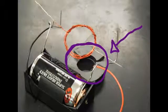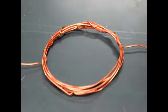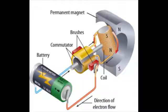For a simple electric motor, you need a permanent magnet, coils and wires, a battery or energy source, and it needs to be a series circuit. Other parts include brushes and a commutator.